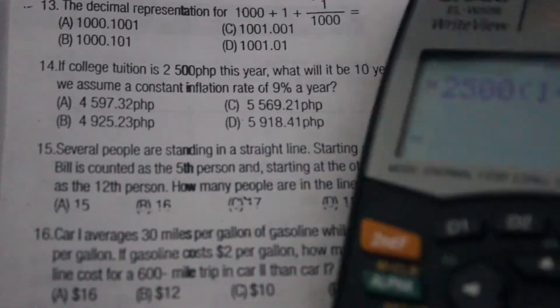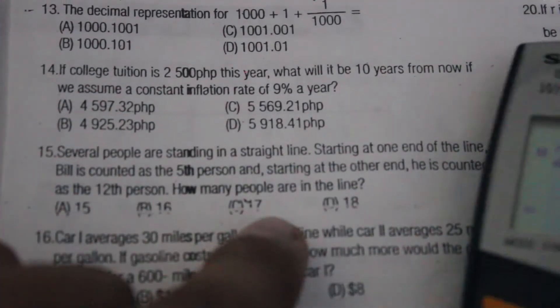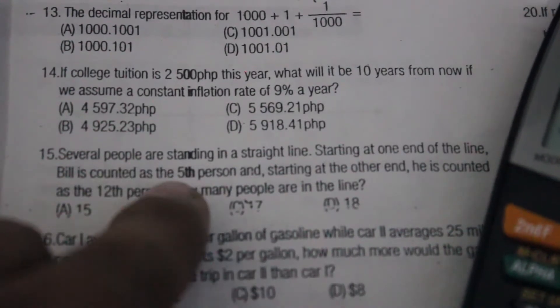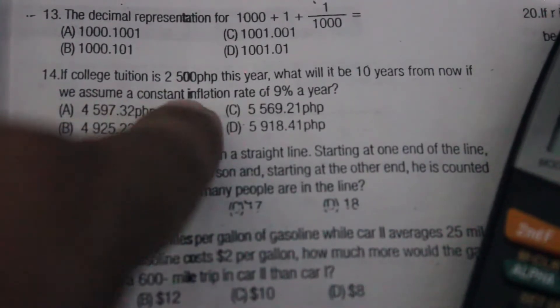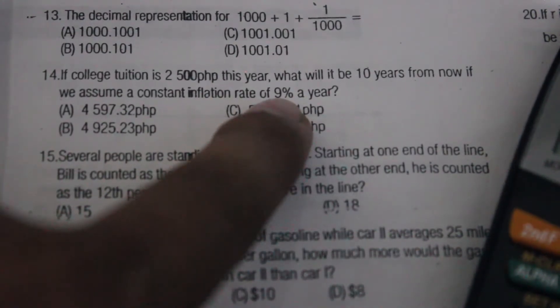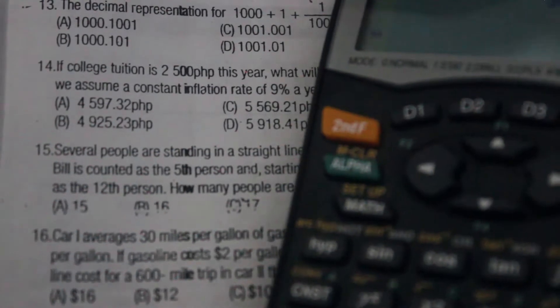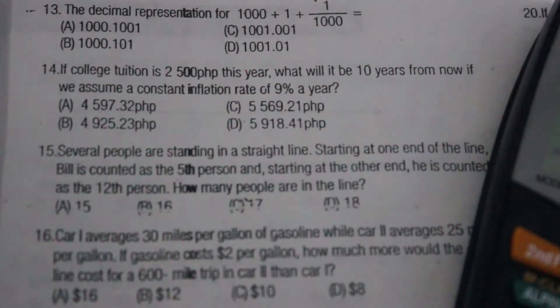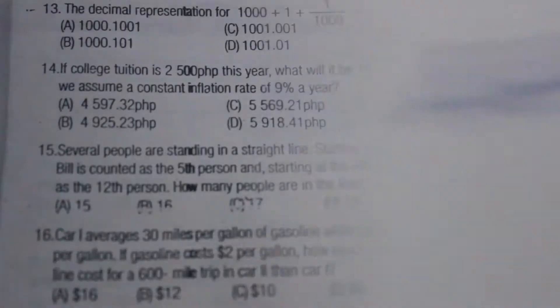Following the formula, 1 plus fraction. So r is the rate, 9%, point zero nine, over a year. We have a constant inflation rate of 9% a year, so we're gonna put 1 here. Then close.